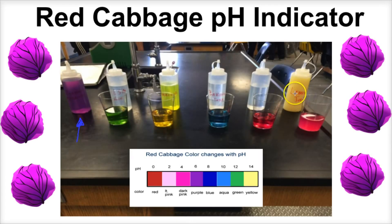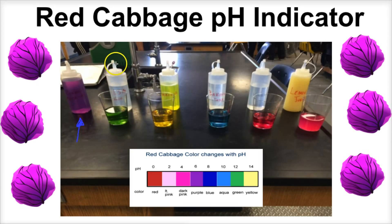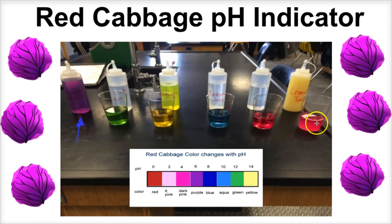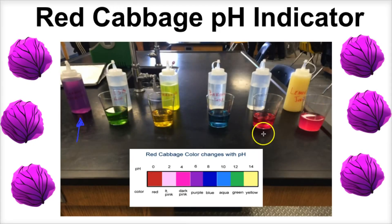The substances we used were lemon juice, vinegar, baking soda, ammonia — which is actually clear; we used lemon-scented ammonia — and 1.5 molar sodium hydroxide. We squirted some of each solution into clear plastic cups, then added the red cabbage pH indicator into each cup. The solutions turned different colors, which we can compare to the red cabbage pH indicator chart to determine the pH of each substance.